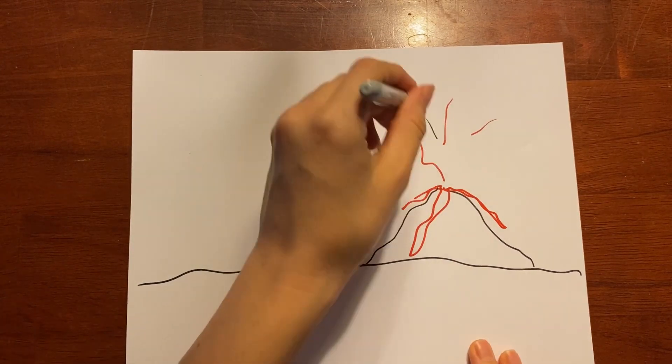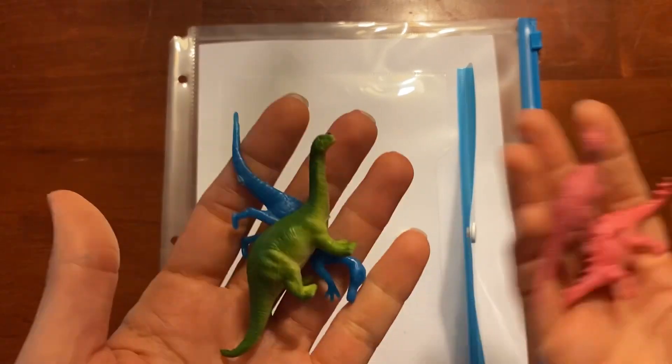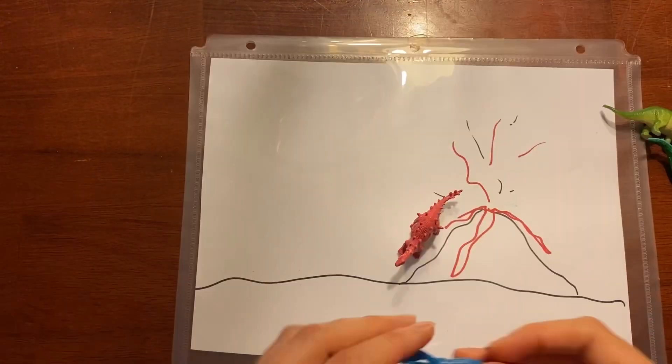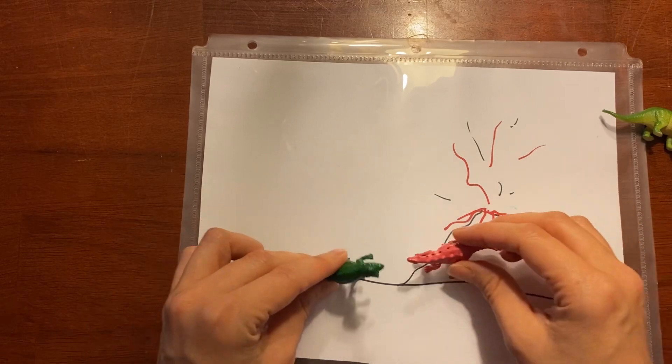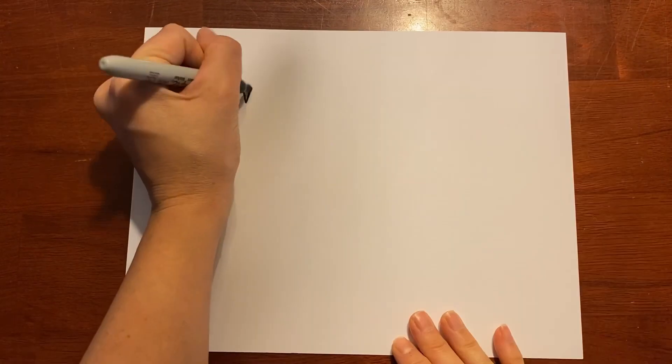My son is really into pretend play. So I drew a setting of a volcano and then in the back pouch, you put whatever item they're going to use for the pretend play. So he can play with his little toys in the car and have a setting to go with it.